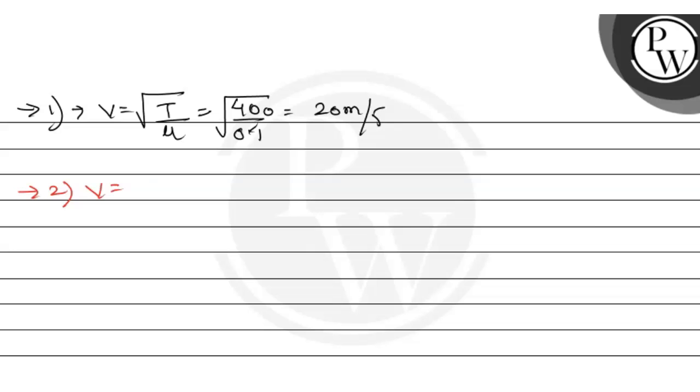Second part, velocity equals frequency into wavelength. Frequency is 1 by T, reciprocal of time period into wavelength. So wavelength equals velocity into time period, which is 20 into 0.1, which equals 2 meters. So our second part solved.